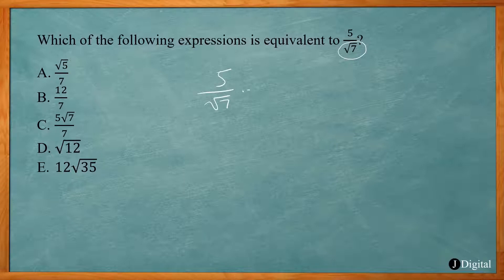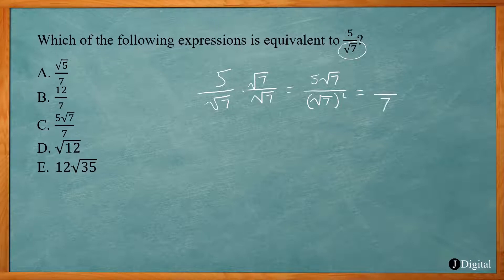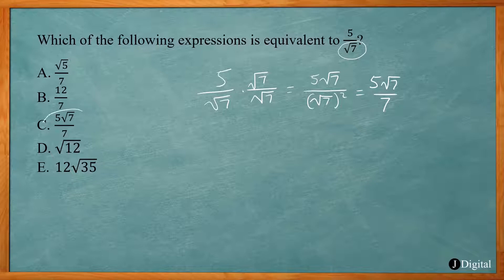In this case, we want to multiply top and bottom by the square root of 7. If we do that, that will get rid of the radical in the denominator. So you really have square root of 7 squared on the bottom, and 5 square root of 7 on top. Now square root of 7 squared just gives you 7. Since those are not the same kind of terms, we can't simplify 5 times square root of 7 — that gives us a decimal. If we look at our answer choices, they're not in decimal form. So we want to keep it as 5 square root of 7 divided by 7. That's choice C.